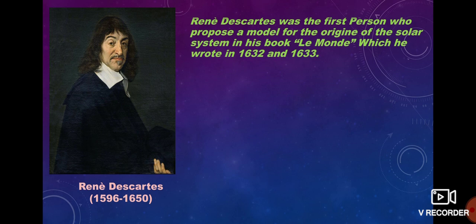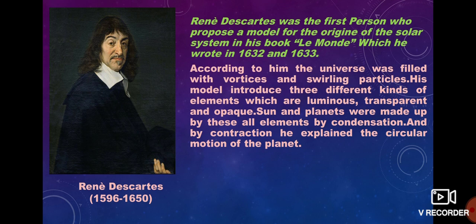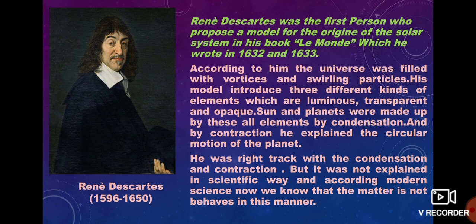Do you know who was the first person to try to explain the origin of the solar system? He was the great mathematician René Descartes. Descartes was the first person to propose a model for the origin of the solar system in his book 'Le Monde', which he wrote in 1632 and 1633. According to him, the universe was filled with vortices and swirling particles. His model introduced three different kinds of elements — luminous, transparent, and opaque — and the Sun and planets were made up of these elements by condensation and contraction.